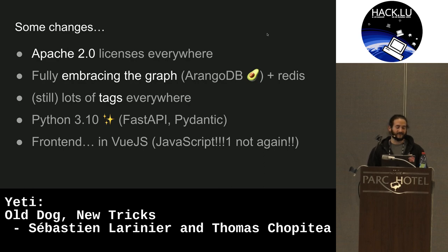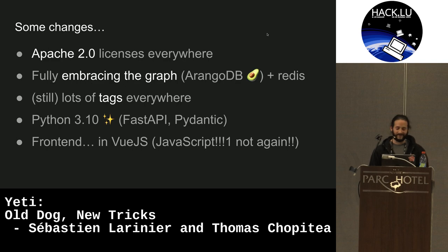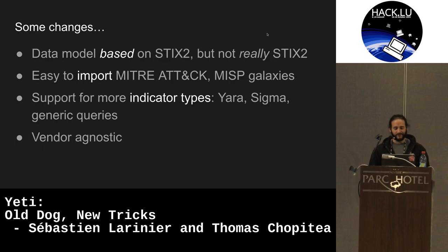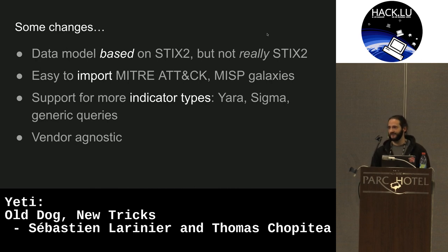We're using FastAPI and Pydantic, two great Python libraries for creating services with APIs. And the frontend — yes, still JavaScript once more. Our data model is inspired by STIX 2, but it's not really STIX 2. Tibetan Brown Bear was entirely STIX 2 compliant, but that gave us a lot of headaches we decided to avoid. It's still easy to import ATT&CK libraries or MISP galaxies by writing a feed.